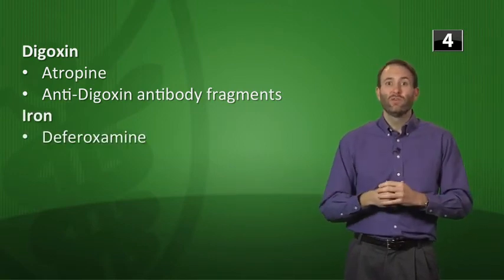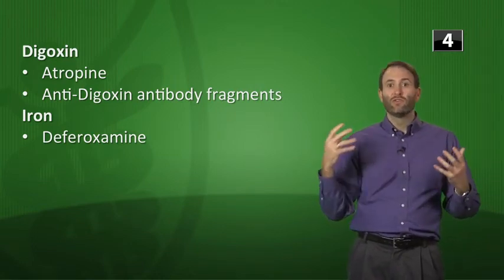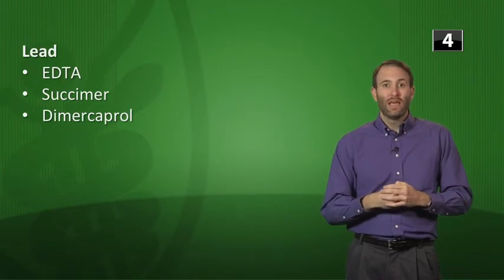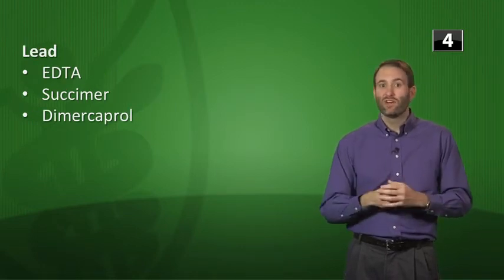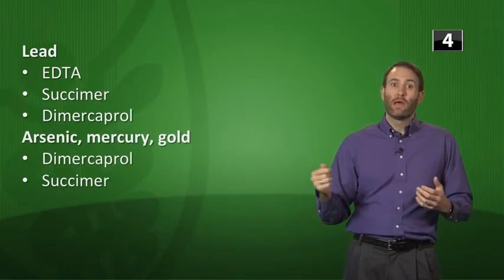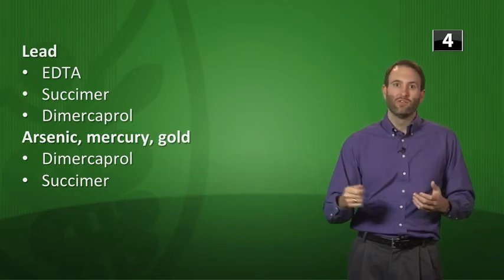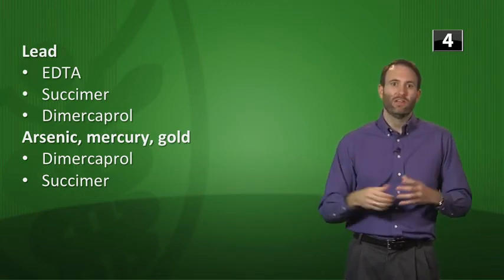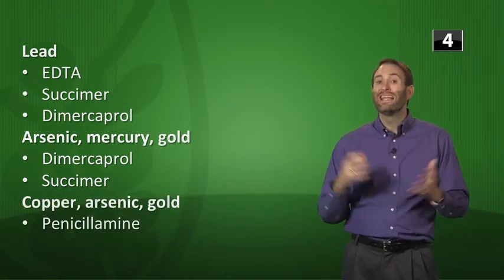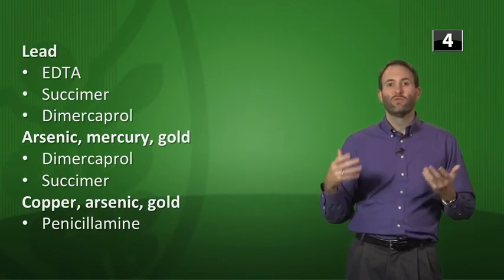Next, we have iron. The treatment for iron toxicity is going to be deferoxamine. Remember, you've got to remember that chemical symbol for iron is Fe. So ferroxamine is how you remember that. Lead, the antidote would be EDTA or succimer or dimercaprol. Arsenic, mercury, and gold, you can use dimercaprol or succimer. Again, remember that dimercaprol. You can think of the merc for mercury, and also remember the dime for any type of gold or monetary unit. Moving on to the copper, arsenic, and gold, penicillamine. Remember, pennies are made of copper, so we treat toxicity with penicillamine.